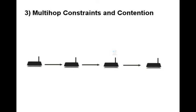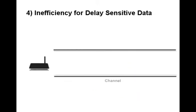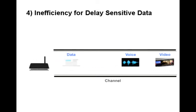Problem number three is multi-hop constraints, where throughput decreases significantly as the number of hops increases. The next problem is inefficiency for delay sensitive data. Due to extreme computations for the channel, sensitive data such as voice and video are not given proper privilege.